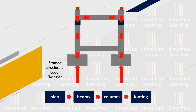Looking at how frame structure transfers its load to the soil: first from slab to minor beams or cross beams, then to major beams, then to column, then to footing, and ultimately to the strata. This is how frame structure load transfer takes place.